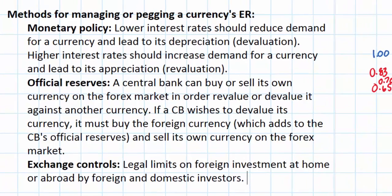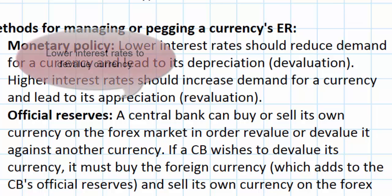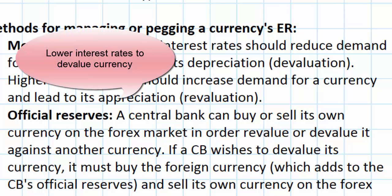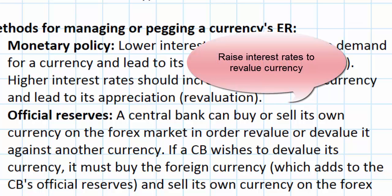So there are three tools for managing an exchange rate. Central banks can use monetary policy — by lowering interest rates they can reduce demand for the currency in forex markets, since investments within that economy become less attractive, and help keep the currency below a price ceiling. By raising interest rates they could make investment in that country more attractive, causing demand for the currency to rise and keep the exchange rate above a price floor.